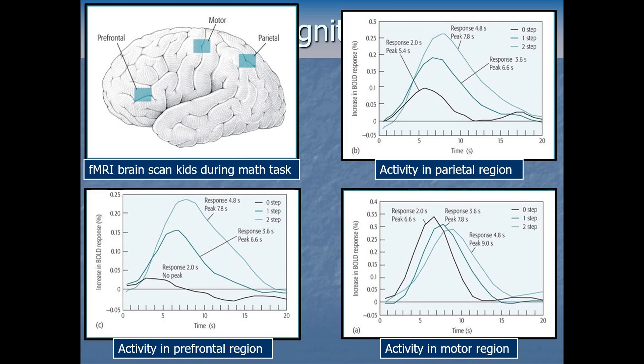We might see the visual cortex light up first as they perceive the numbers and symbols, then areas further into the brain as they retrieve the meaning of symbols and the steps needed to solve the problem. Eventually they send a motor command telling the mouth to say '4' or the finger to press the 4 key. We measure reaction time, but brain scan information lets us understand the intervening steps — the cognition leading to the response. Using imaging like fMRI, PET scans, or EEG, we can watch the living brain in action and figure out the specifics of how thinking is carried out.